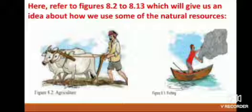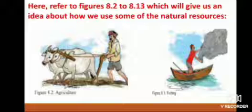In figure 8.2, a man is seen ploughing the land. The farmer ploughs the soil layer and makes the land cultivable. In this cultivable land, he grows various crops and fulfills his own and others' need for food. For this purpose, he uses the soil that is naturally available on land as a resource. Soil is used all over the world and therefore soil is a very important resource for agriculture. Figure 8.3 shows a man catching fish.